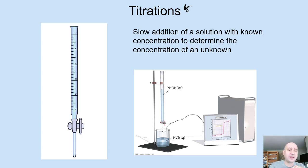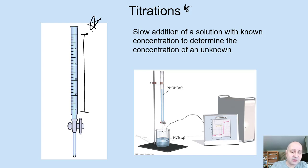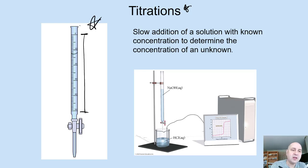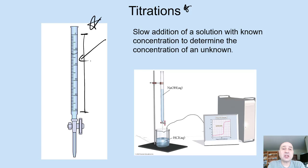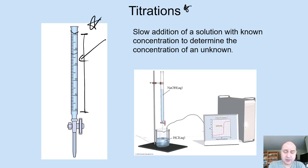Then you could read the burette — a very long graduated cylinder that starts at 0 and ends at 50. The reason it's long is so you can correctly read the volumes. The volume of solution added equals the final reading minus the initial reading. So if you start at 0 and go to 22.4 mL, that is the volume you've added.